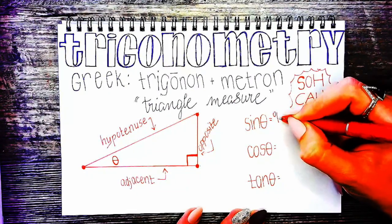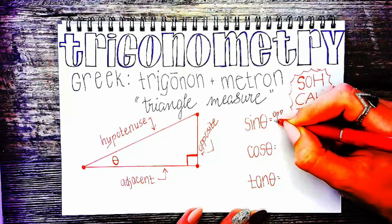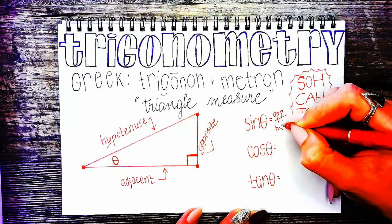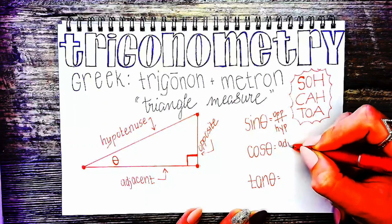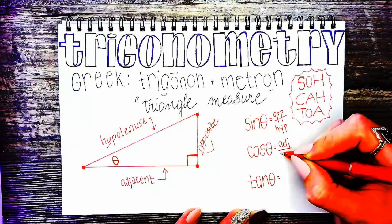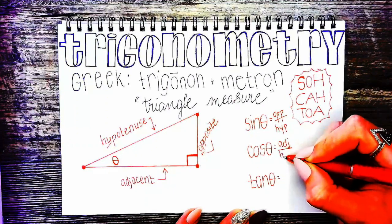SOH is because sine equals the opposite over hypotenuse. CAH is to help us remember that cosine of theta equals the adjacent over the hypotenuse.